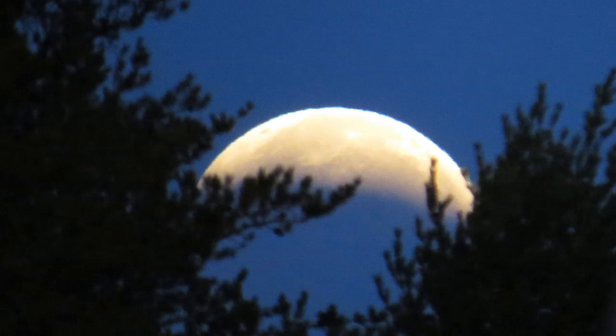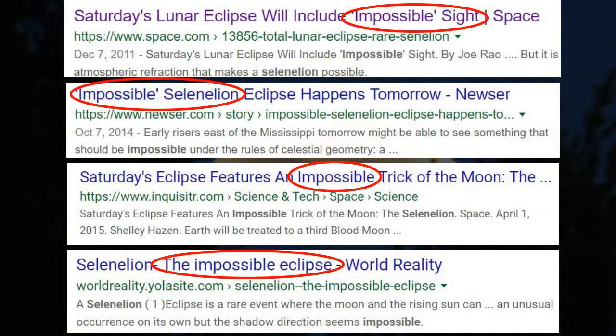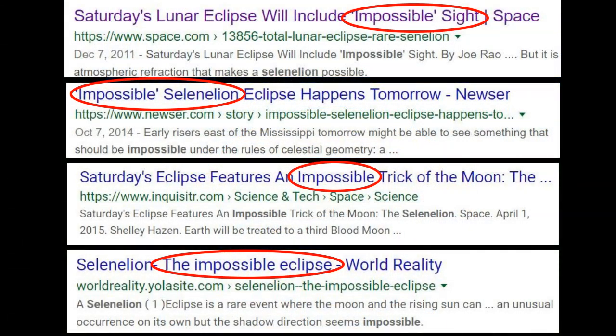Now it's time to talk about the impossible selenelion eclipse, which is where this series was always headed. Of course, it's no secret that selenelion eclipses are geometrically impossible. A quick Google search will bring up all kinds of sources, including NASA, talking about some upcoming impossible selenelion.